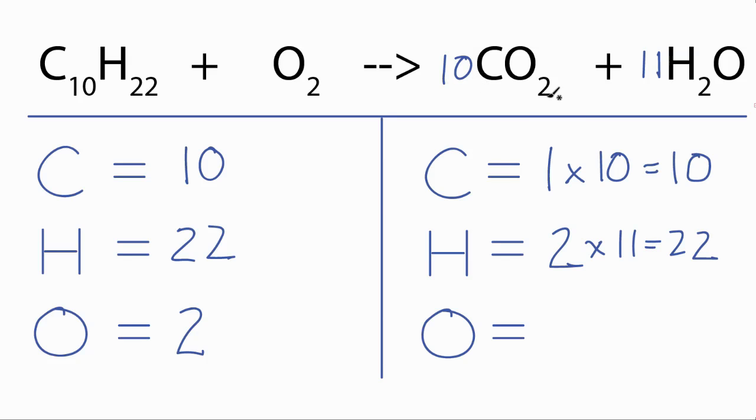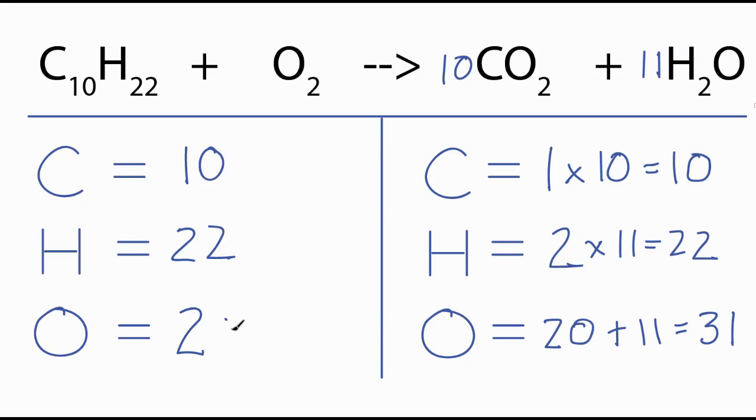So I have 10 times 2, 20 oxygens there, plus 11 times the 1, 11, for a total of 31 oxygens. To fix this, if we were to multiply 2 times 31 over 2, the 2s would cancel out, and we'd be left with 31. And that's what we'll do. We'll put 31 over 2 in front of the oxygen, and now this equation is balanced.